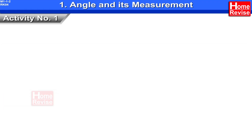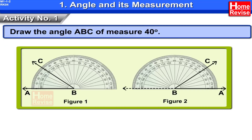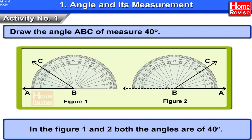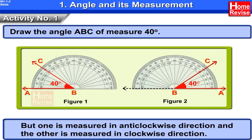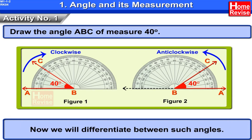Activity 1: Draw the angle ABC of measure 40 degrees. In figures 1 and 2, both the angles are of 40 degrees, but one is measured in anticlockwise direction and the other is measured in clockwise direction. Now we will differentiate between such angles.